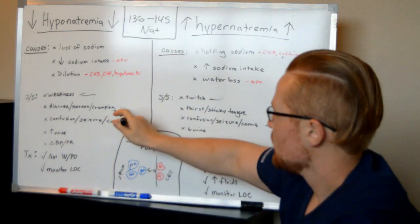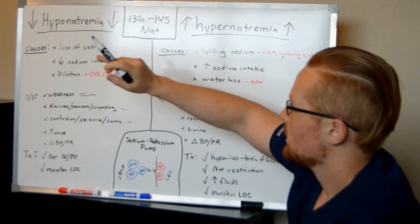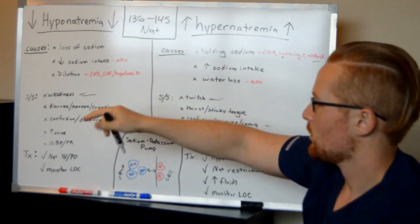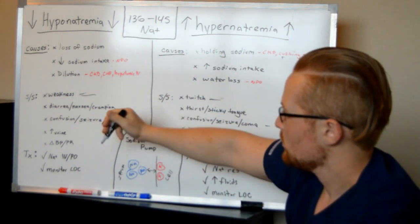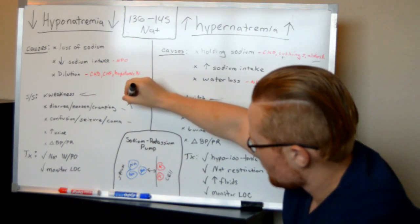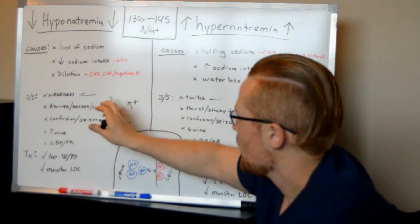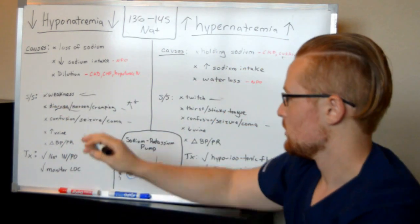Now you'll see with hyponatremia that you can cause diarrhea, nausea, and cramping. This is typically because salts and potassiums are kind of an inverse like the sodium potassium pump. So imagine low salts equals increased potassiums. And this isn't always the case, but the way it responds, if you have high potassium, the body's going to want to have diarrhea and nausea and vomiting to get rid of that potassium.